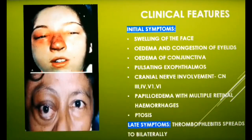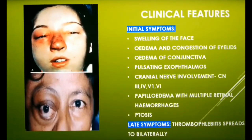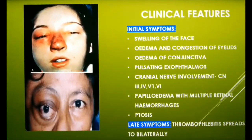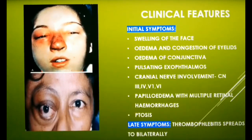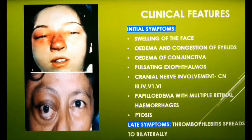There is pulsating exophthalmos and involvement of the third, fourth, fifth, and sixth cranial nerves, resulting in ophthalmoplegia and paresis or paralysis of the lateral rectus muscle of the eye. There is also papilledema with multiple retinal hemorrhages, and epistaxis due to increased intracranial pressure. These are the initial symptoms of cavernous sinus thrombosis.